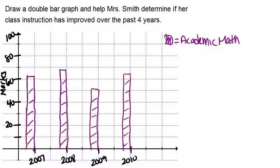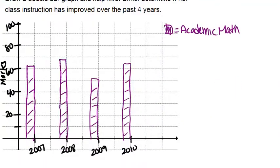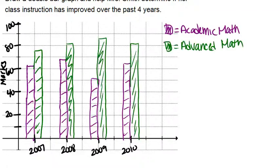Now we're going to do the same thing for advanced math and then we can analyze our graph. For advanced math, the first data point was 74.7 in 2007. We pick a new color and go up to 74.7 for 2007, then add in the next three bars. There we have our complete double bar graph.